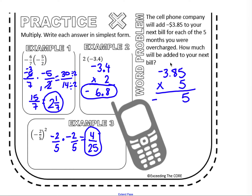5 times 5 is 25 — write 5, carry 2. 5 times 8 is 40, plus 2 is 42. 5 times 3 is 15, plus 4 is 19. I'm counting decimal places: 1, 2 decimals in my problem, so 1, 2 decimals in my answer. Since this is a money problem, my final answer is negative $19.25.